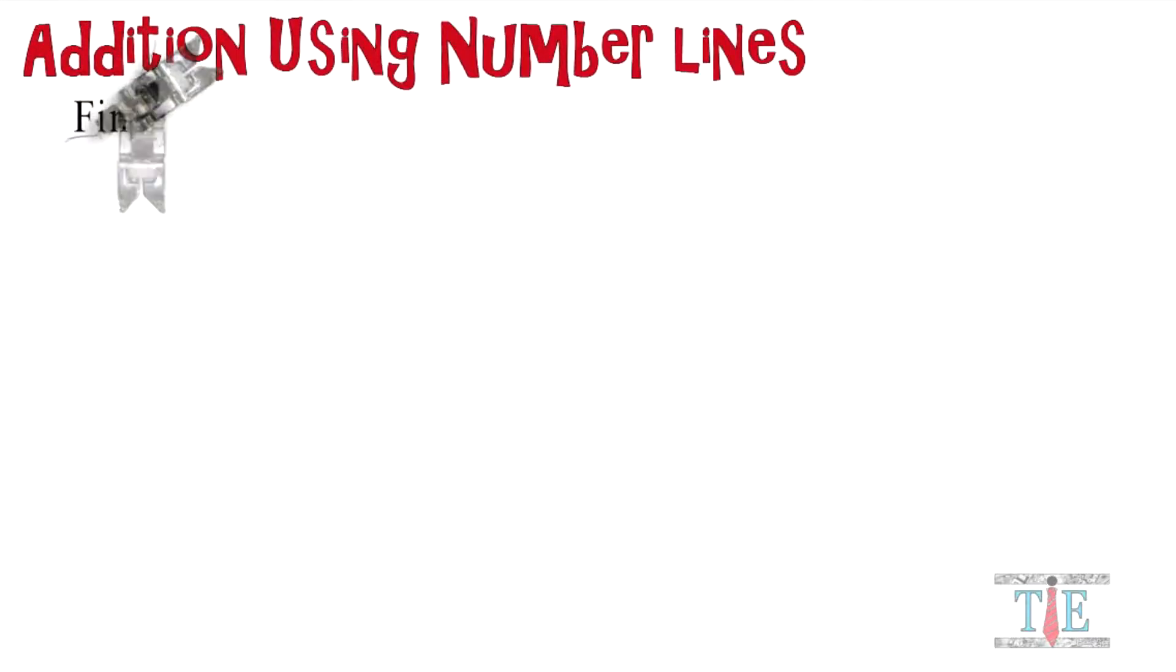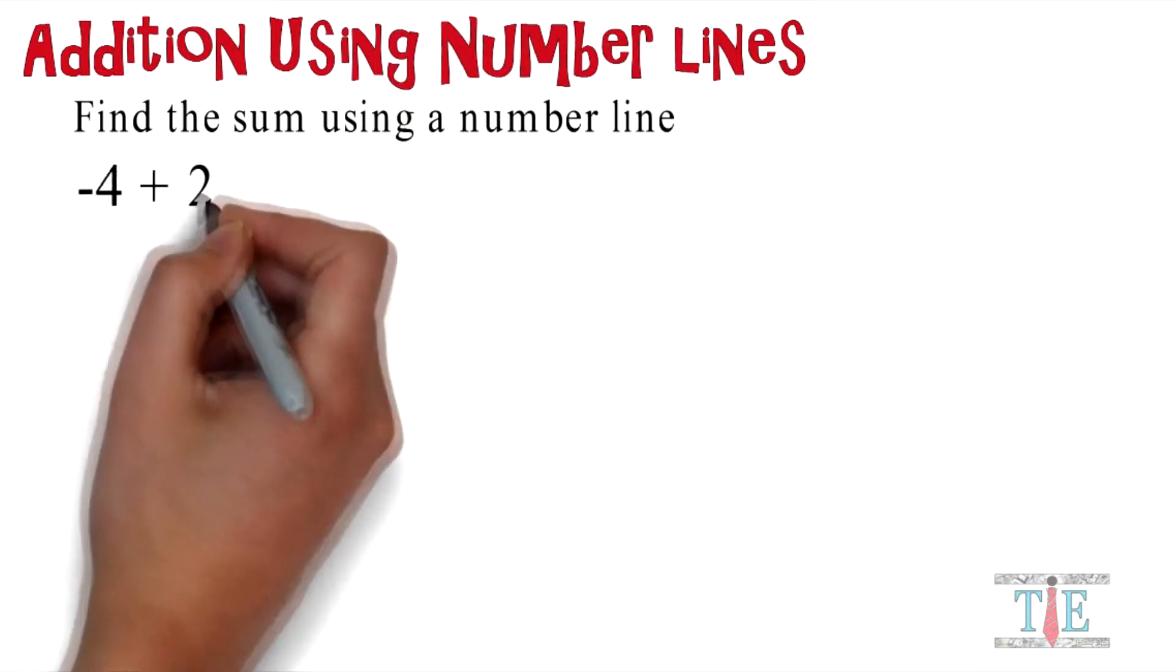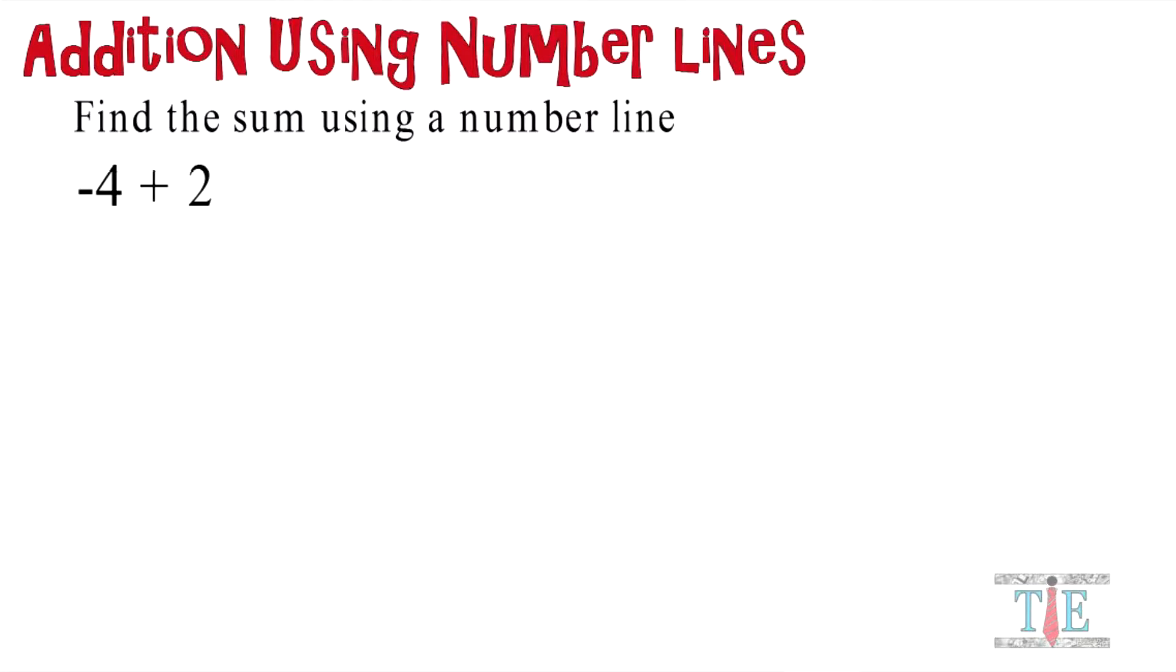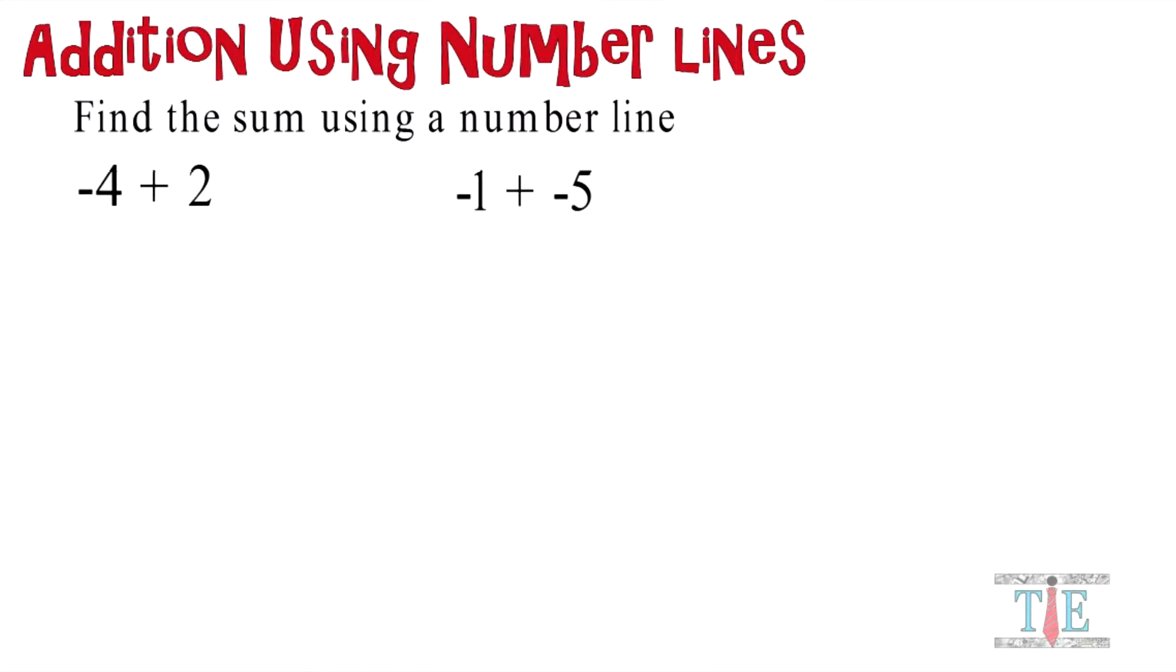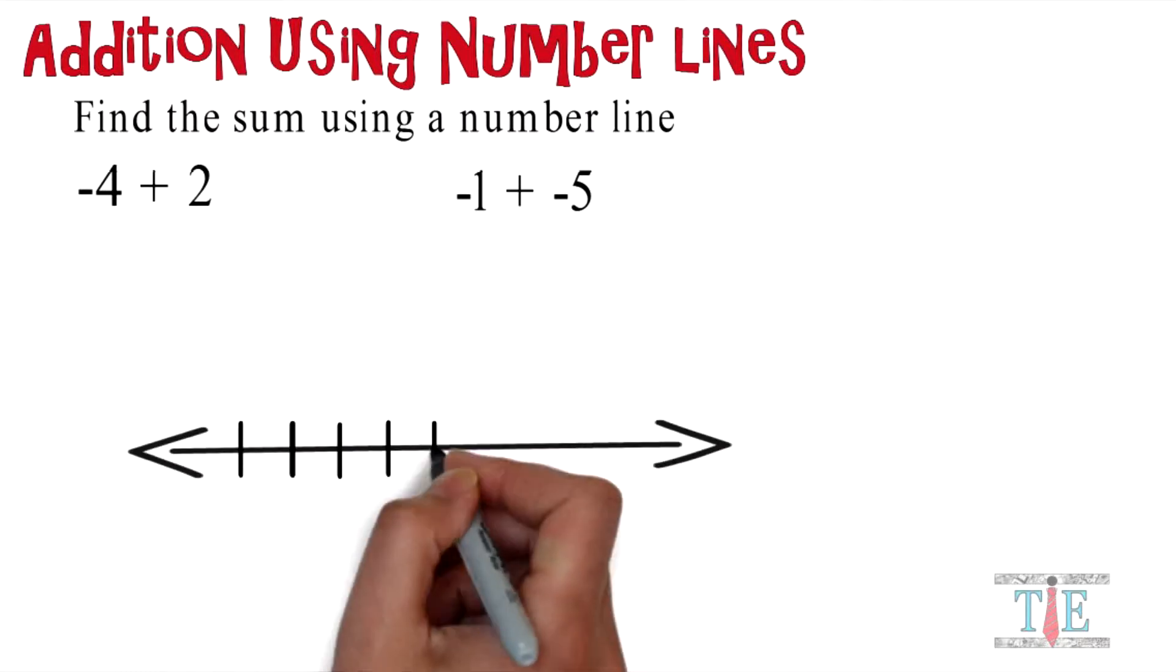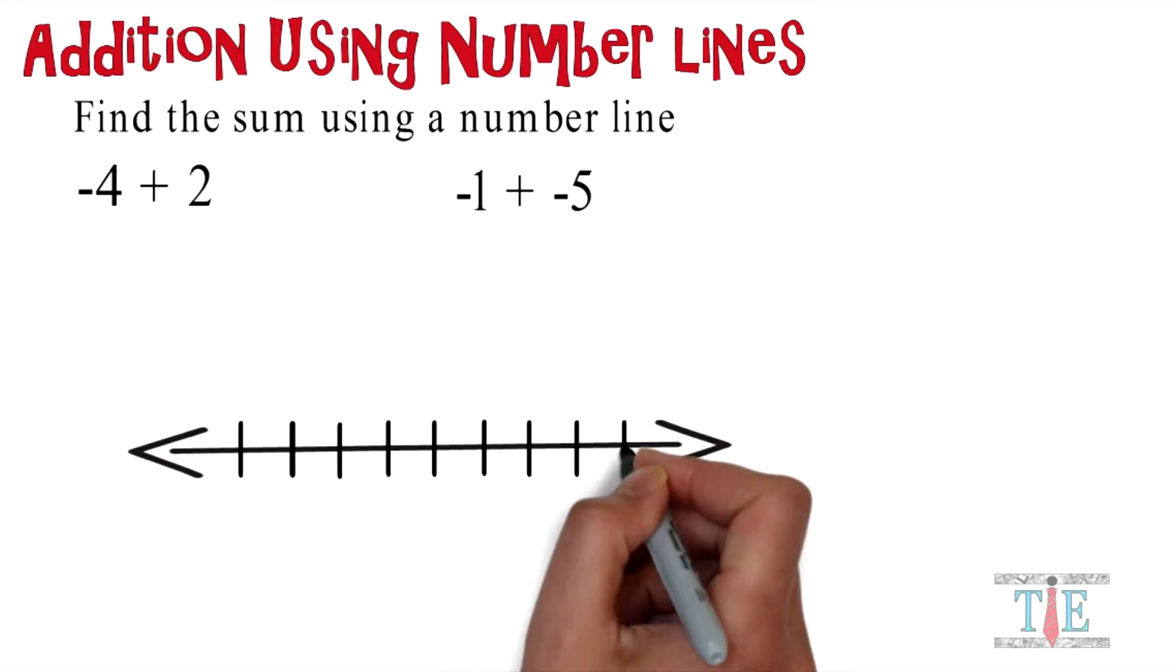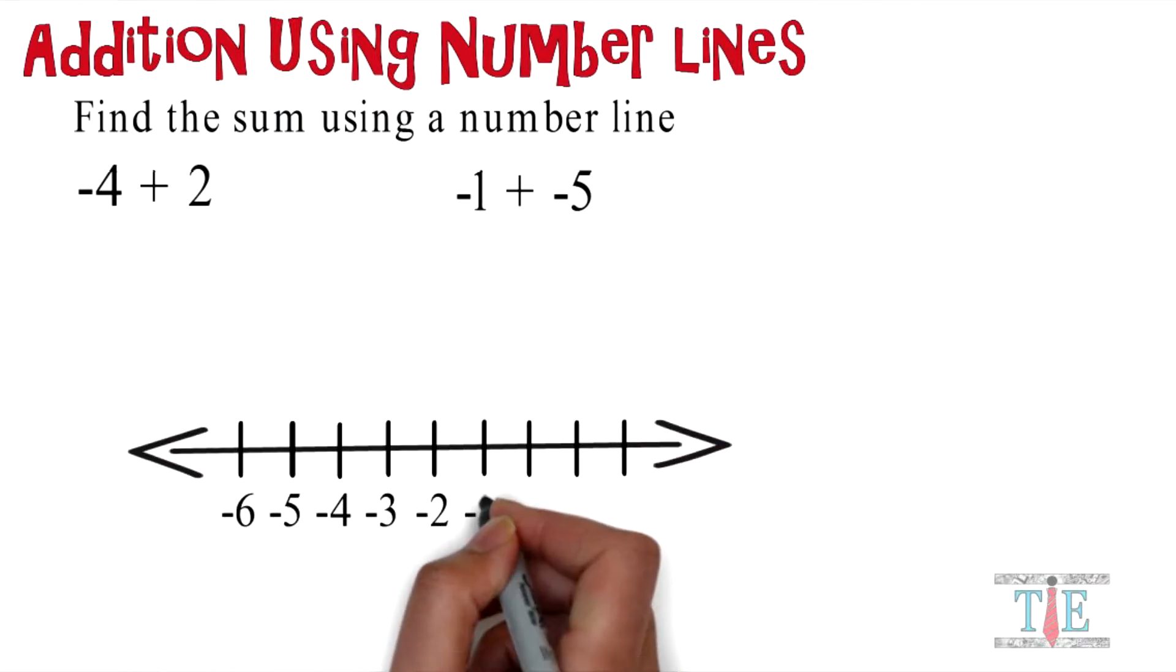Addition using number lines. Find the sum using a number line: negative 4 plus 2, and negative 1 plus negative 5. I'm going to draw a number line below to help us out. We'll start with negative 6, work our way all the way down from negative 6 to positive 2.